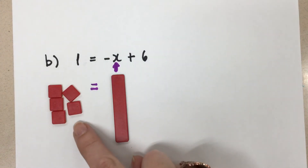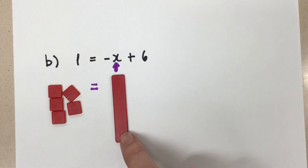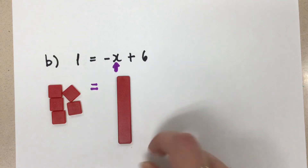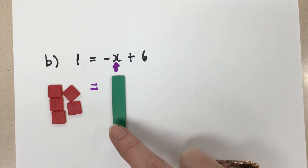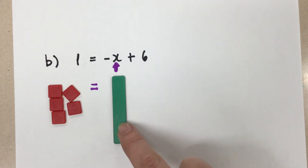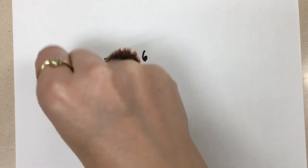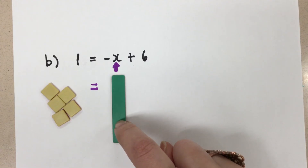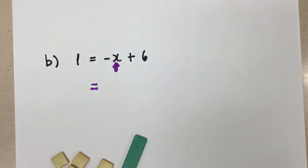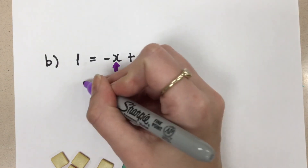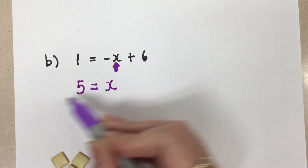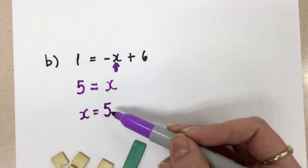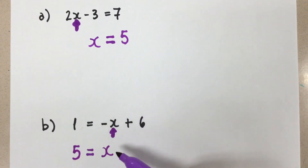So right now we have negative 5 equals negative x. But negative x is not x — we want x to be positive. If I flip the x tile over it becomes positive, but since we're dealing with an equation I need to flip all tiles on both sides to keep things balanced. Now we have 1x equals 5. We can read equations in the opposite direction, so x equals 5. We ended up with the same answer as our last question, but that was just by coincidence — they're not related to each other.